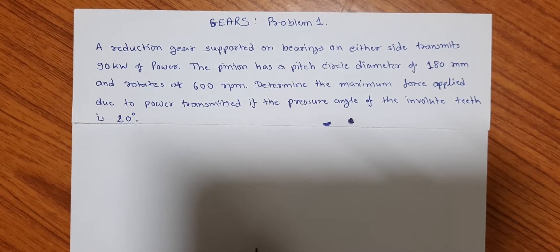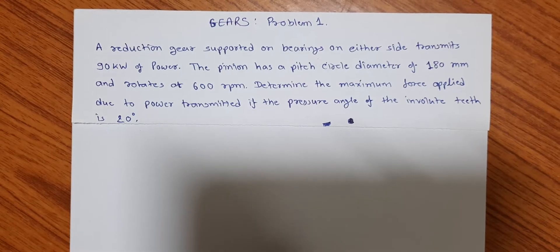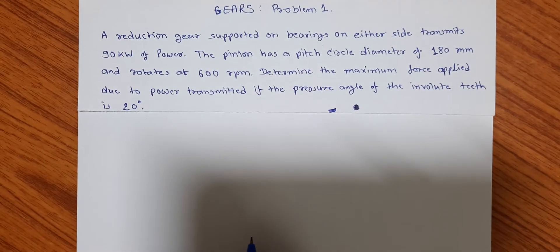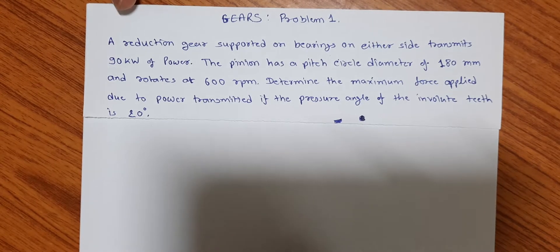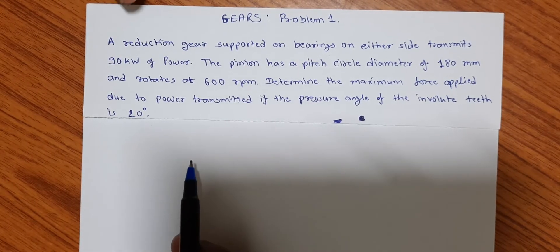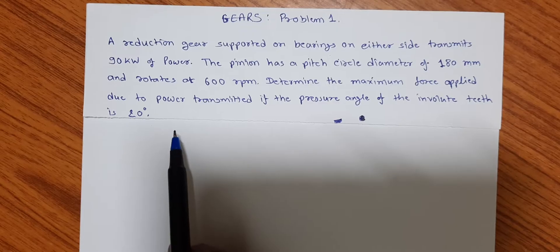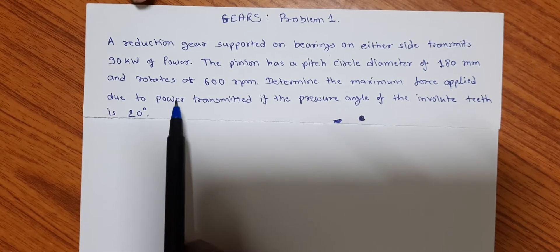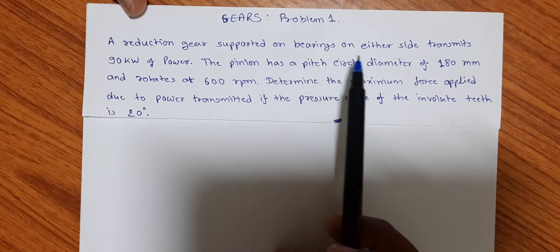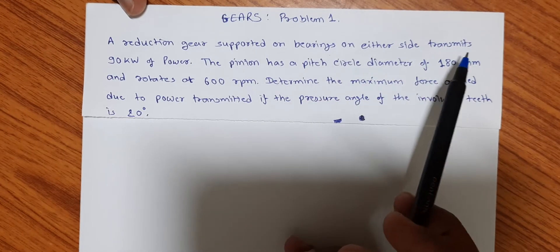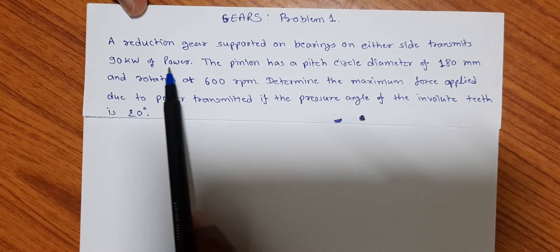Dear friends, we are starting with the problems. First, we are considering the problem of gears. The first problem: the data is given like this. A reduction gear supported on bearings on either side transmits 90 kilowatts of power.